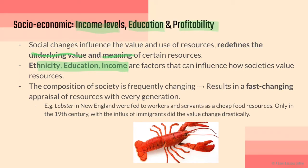The composition of society is always frequently changing, resulting in fast-changing appraisal of resources with every generation. With each new generation, certain resources go out of date while others rise in demand. A good example: back in colonial New England, lobster was used to feed workers and servants as a very cheap food resource. It was only in the 19th century, with an influx of immigrants who brought a new perspective, that lobster started to be seen as a gourmet, higher-value food.